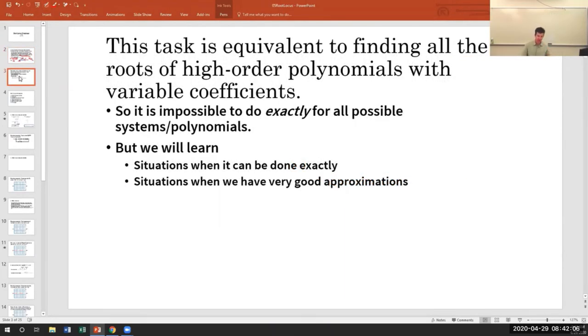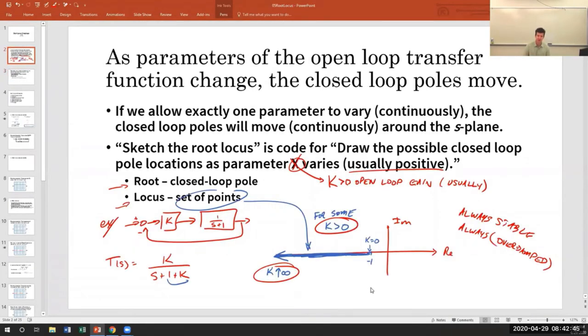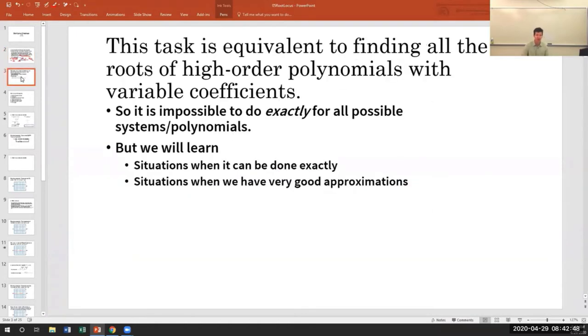So now the bad news. If I want you to plot the locations of all possible closed loop roots for all possible gains k, for all possible systems of arbitrary order, that's impossible. Because of the theorem that you cannot find exact, that there exists high order polynomials for which there is no exact formula for the roots. The good news is that there are situations, there are scenarios in which it is explicitly possible. For example, this situation. Dead simple. First order, you don't even need to know the quadratic formula to find those roots.